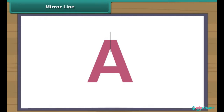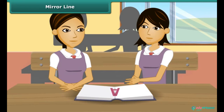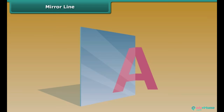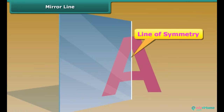A shape has a line of symmetry when one half of it is the mirror image of the other half. Now let's check whether the line drawn on A is the line of symmetry or not. We take its one half and place it in front of a mirror. Wow! Its one half is equal to the other half — this means that this is the line of symmetry.